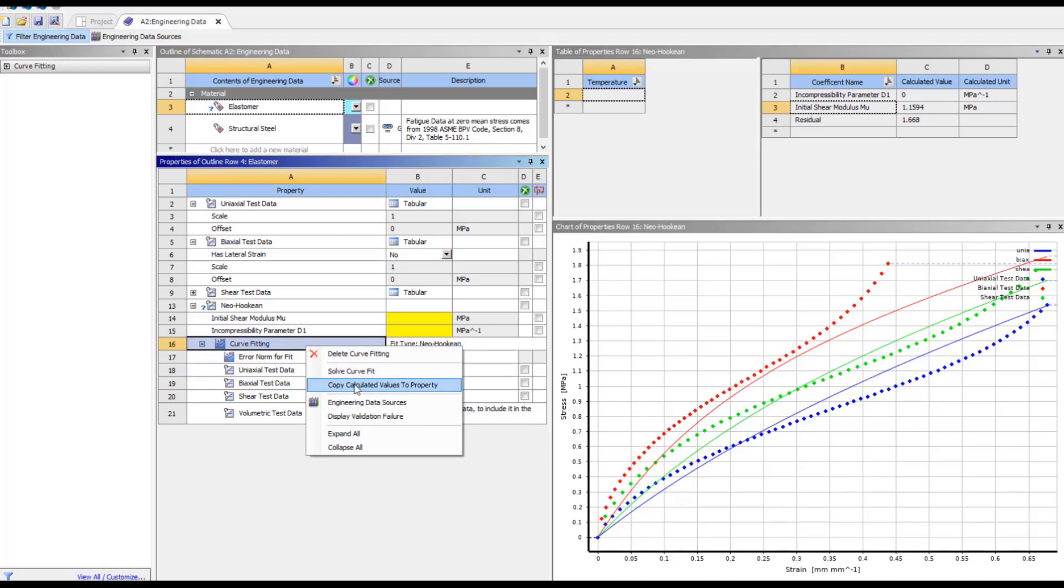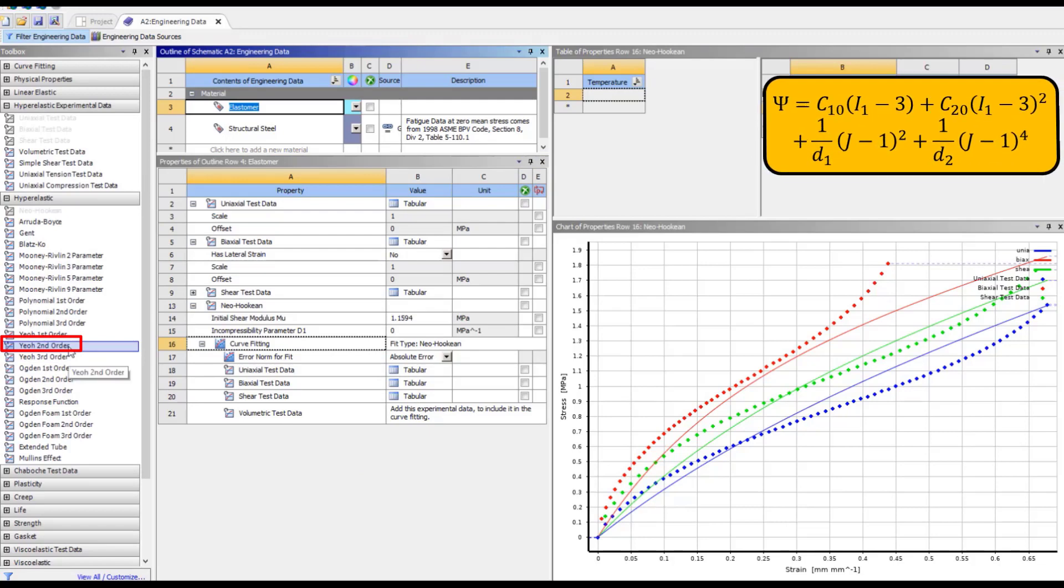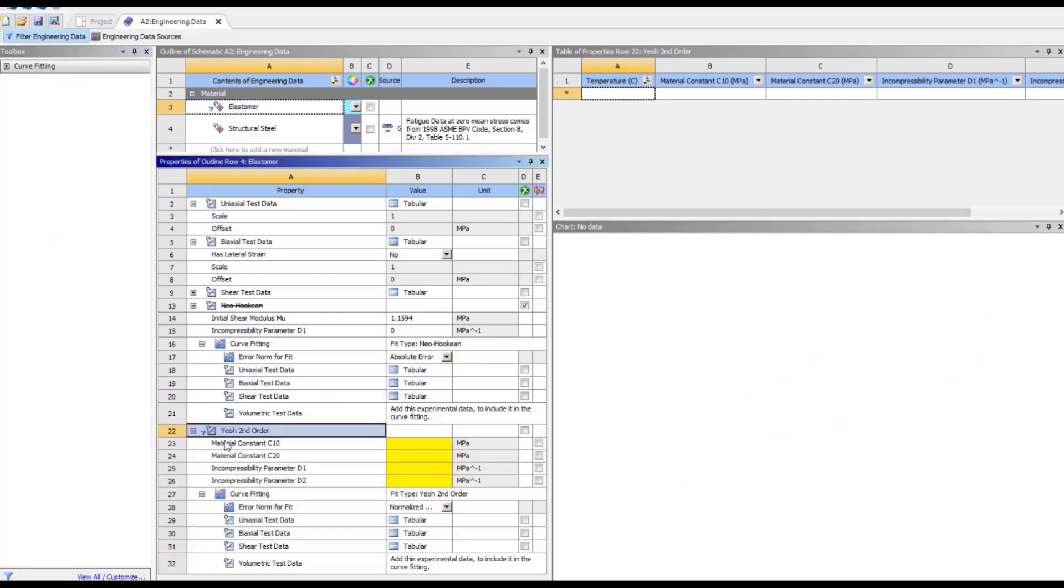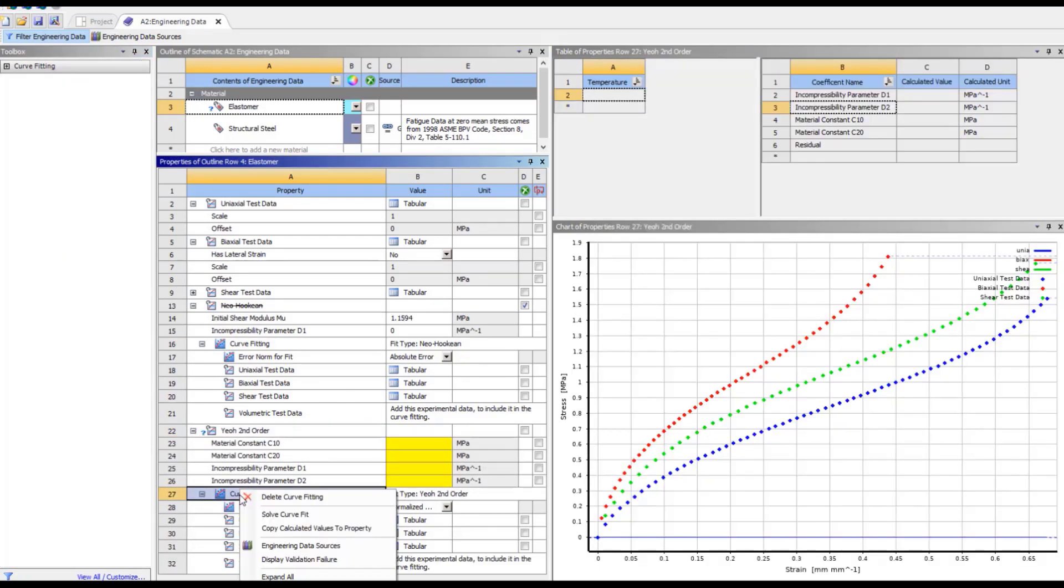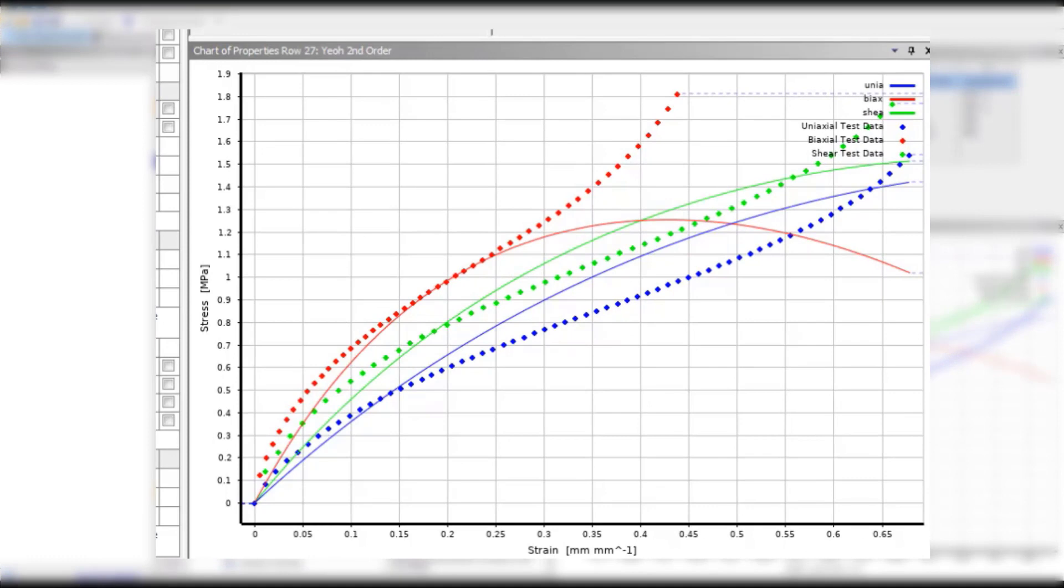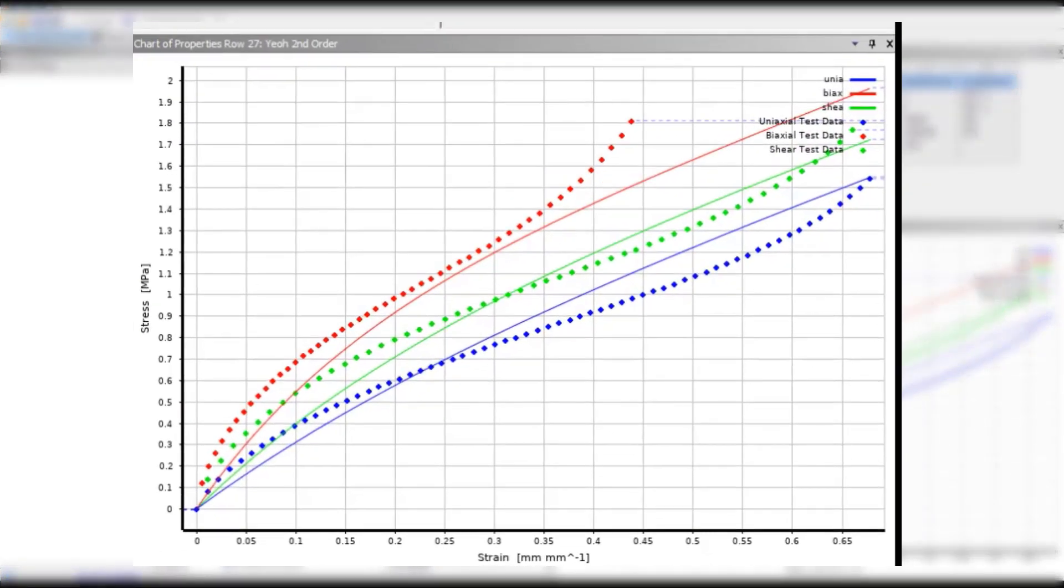Since Neo-Hookean model only has one term, we'll use second-order model which has quadratic term in addition to the Neo-Hookean model. Once again, solve for the curve fit using normalized error. While there isn't much improvement in the uniaxial and shear responses, the biaxial response is dropping down with strain, which indicates that it's unstable. Let's see if using absolute error gives us a better fit. We can see that the quality of fit is better compared to the normalized error norm, but it still doesn't properly capture the shape of the curve.